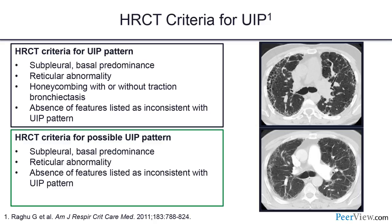On CT scan, the top panel shows HRCT definite criteria for UIP — distribution is subpleural, basilar predominant, with reticular lines. The key feature is honeycombing around the periphery: small cysts lining up along the periphery like a bee's honeycomb. When you have this pattern without ground glass, cysts, or nodules suggesting something else, that's usual interstitial pneumonia — though it only equals IPF if it's idiopathic UIP.